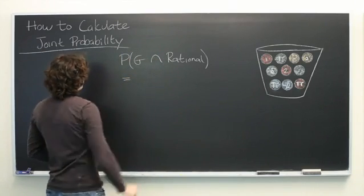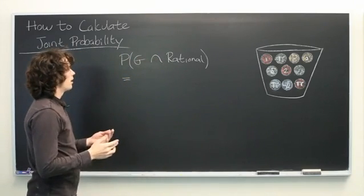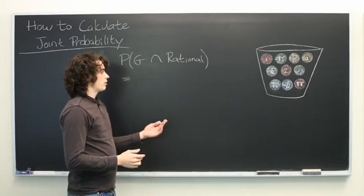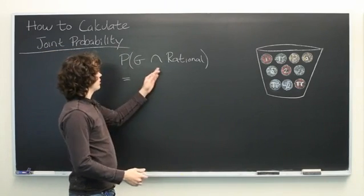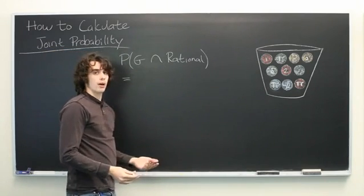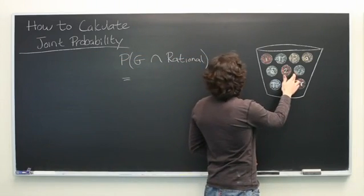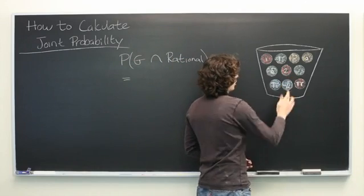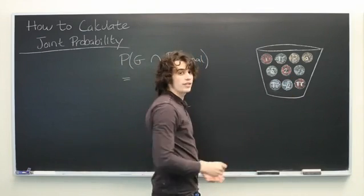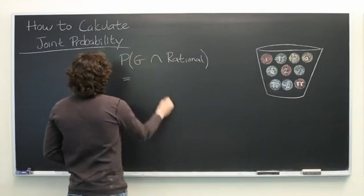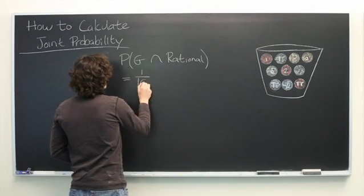Well, the simplest way to do this is to count all of the objects or events that satisfy both of these criteria and then divide that by the total number of events. Here there's only one ball which is both green and rational, green one, out of a total of 10 possible events. So it's simply 1 over 10.